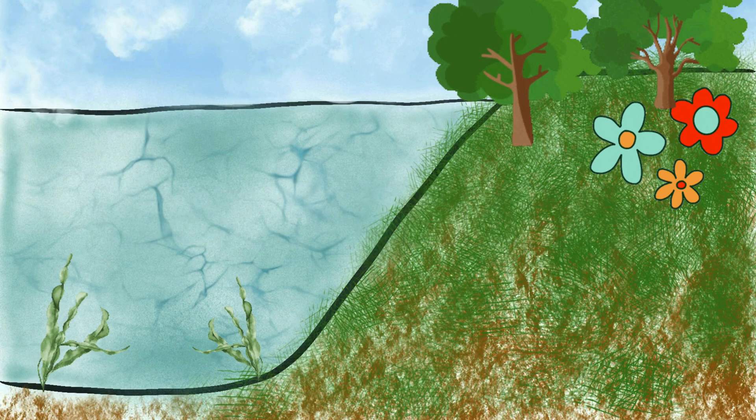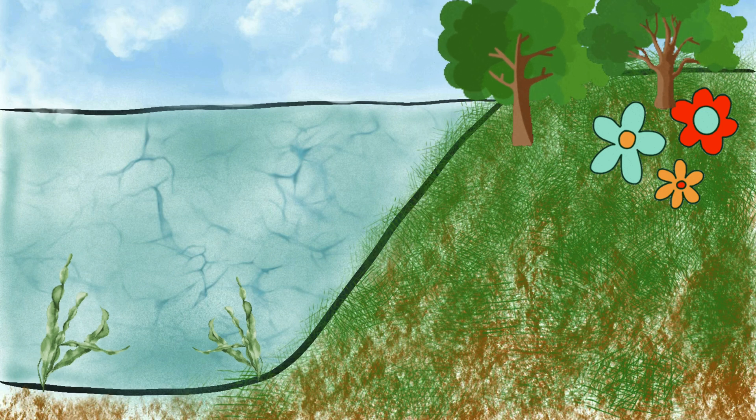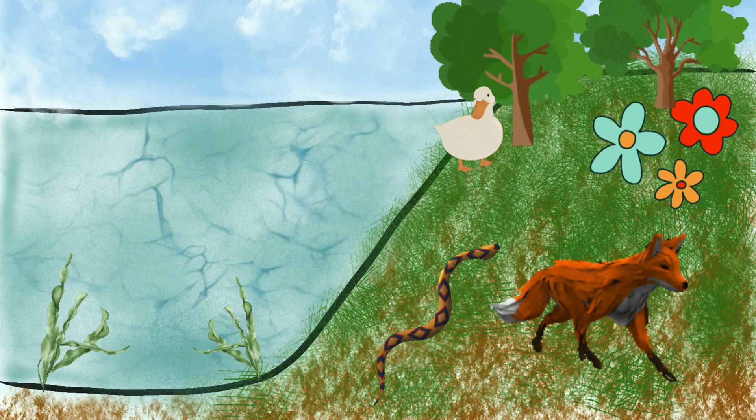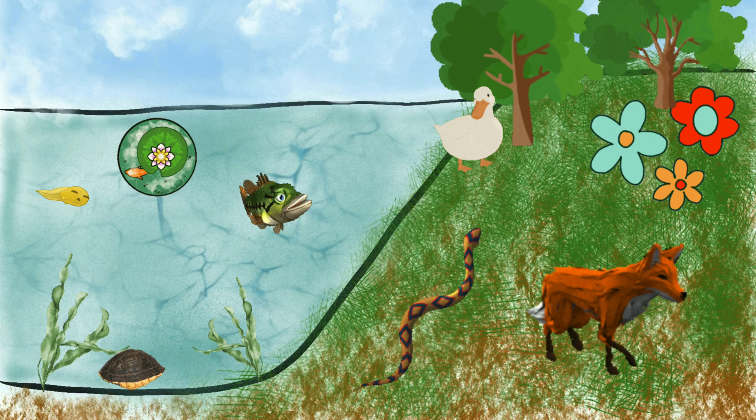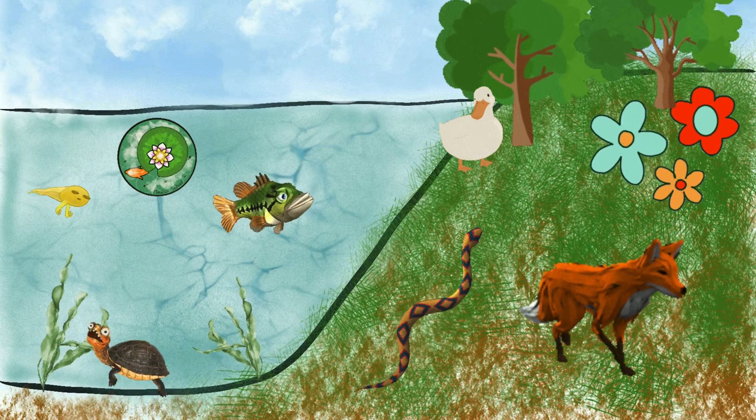Now that you know what an ecosystem is, draw and color your own. Make sure to add your land plants and animals above the water, and your water plants and animals under your water line. Be creative and have fun with this.